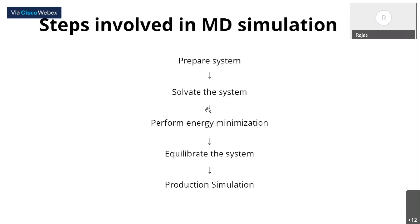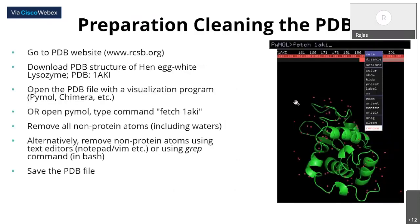To prepare the system we first need a PDB file of the protein we would like to simulate. You can download the protein PDB file from the PDB website where you can search for the protein ID. In this tutorial we will try this on the PDB structure of hen egg white lysozyme — its PDB ID is 1AKI.